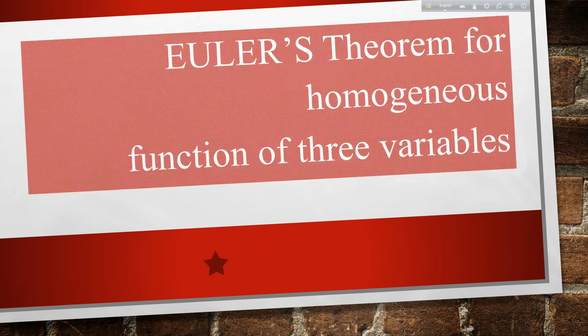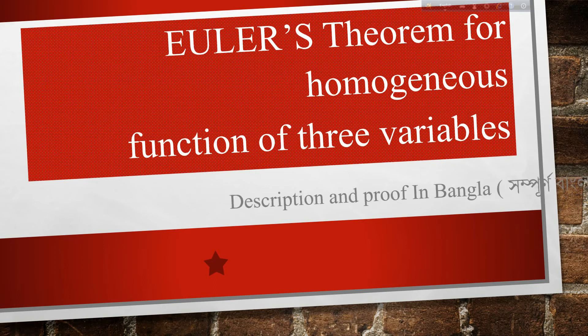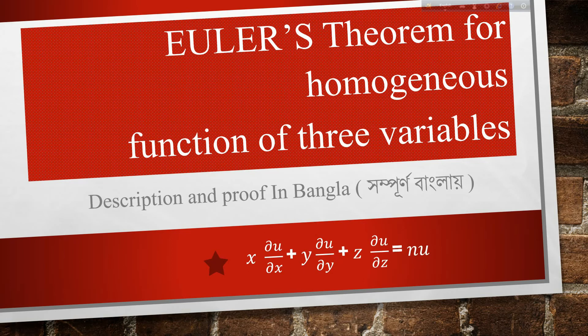Hello everyone, today we are learning about Euler's theorem for homogeneous functions of three variables — description and proof in Bangla. Here is Euler's theorem's equation: x times del u del x, plus y times del u del y, plus z times del u del z, equals n times u.